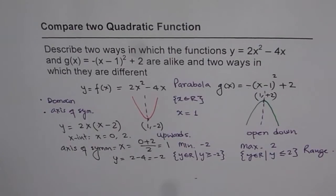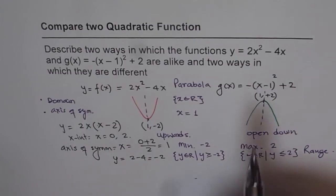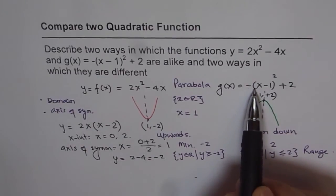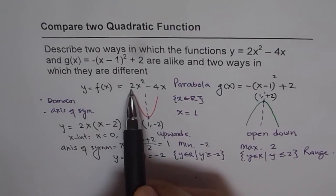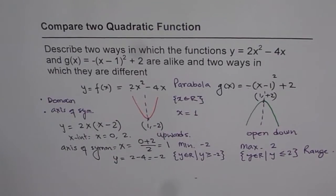Do you see that? So like this, we can give differences and similarities between the two graphs. Another difference is this graph is not vertically stretched as compared to the parent function, but this graph, the first one, is vertically stretched by a factor of 2. So that way, we can give list of similarities and differences.